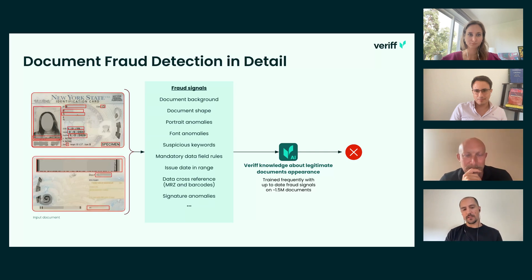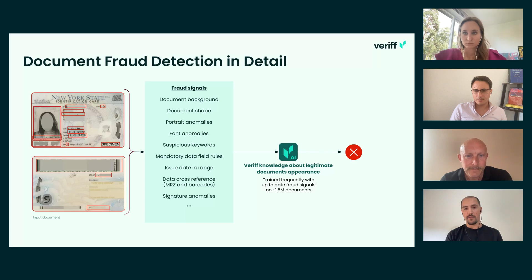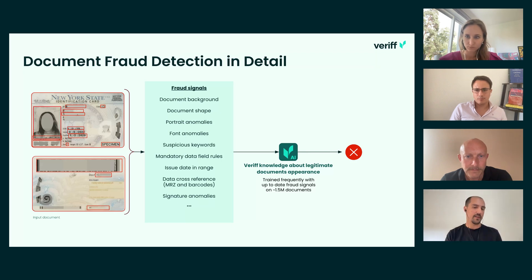We have experienced and tried black-box models that just take a document and try to say whether it's fraudulent or not. But what we found is that by having all these signals very well fine-tuned and then aggregated together, the resulting model is capable of cross-linking all the different signals, and that gives much better performance.